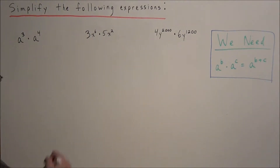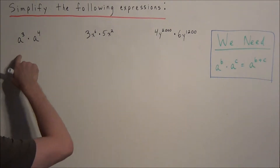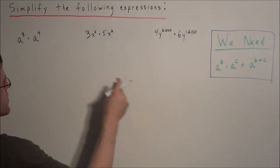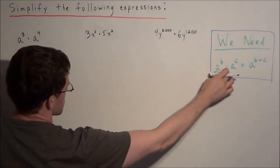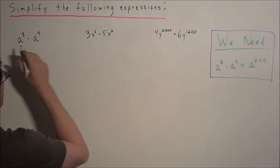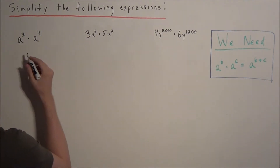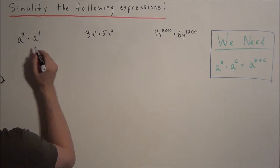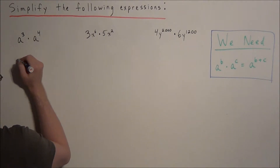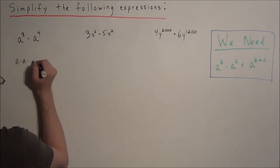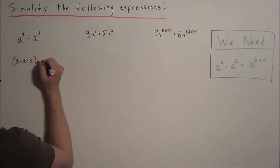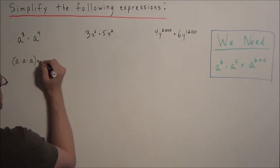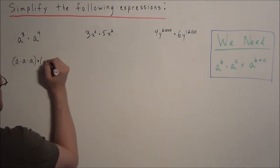So we have a to the third times a to the fourth. If we didn't know how to use the product of powers property, we could just write out a string of three a's and a string of four a's. We have a times a times a — this represents a to the third power — and we're multiplying this by